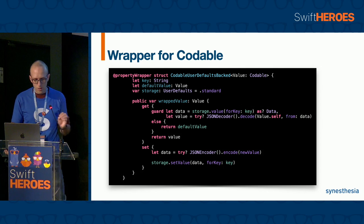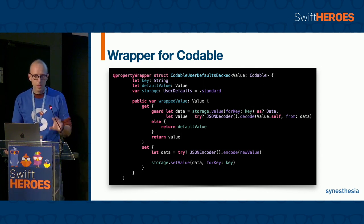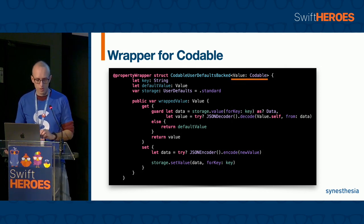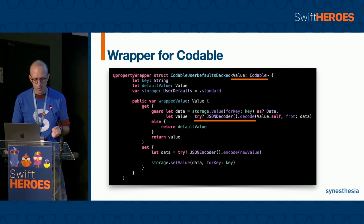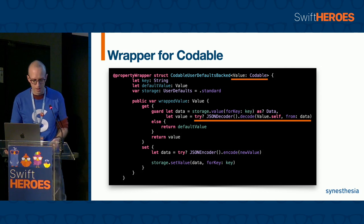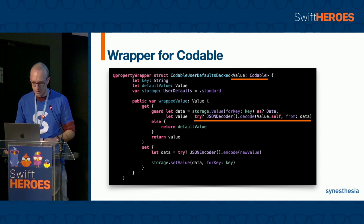We can also implement a property wrapper that allows us to store Codables. The wrapper is pretty much the same. In this case, the generic type has to conform to the Codable protocol, and we have to add a JSON decoder in the getter method to decode the data from storage, and a JSON encoder in the setter method to encode the new value before storing it.